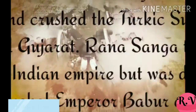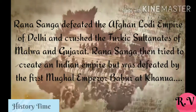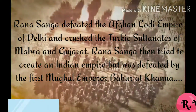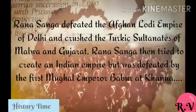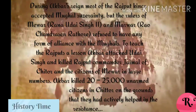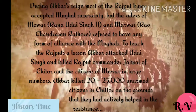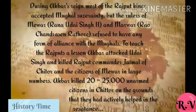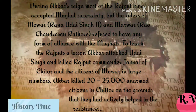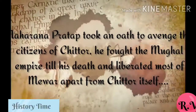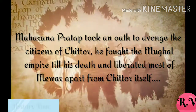Rana Sanga defeated the Afghan Lodi Empire of Delhi and crushed the Turkish Sultanates of Malwa and Gujarat. Rana Sanga then tried to create an Indian Empire but was defeated by the first Mughal Emperor Babur at Khanwa. Akbar killed 20,000–25,000 unarmed citizens in Chittor on the grounds that they had actively helped in the resistance and their rulers did not accept to form an alliance with the Mughals. Pratap took an oath to avenge the citizens of Chittor.